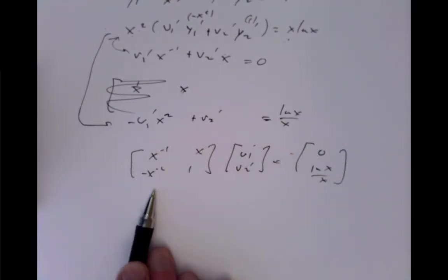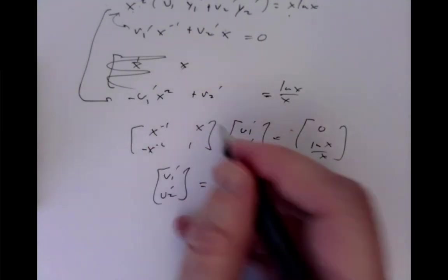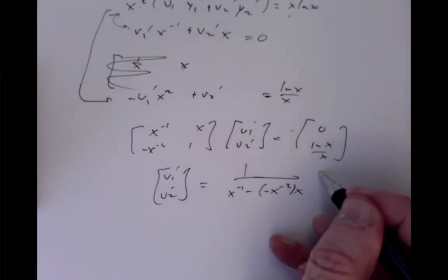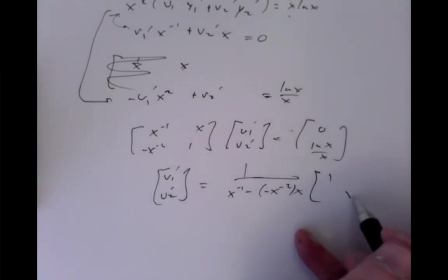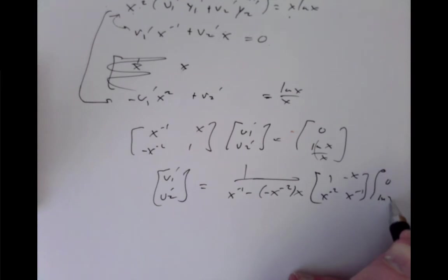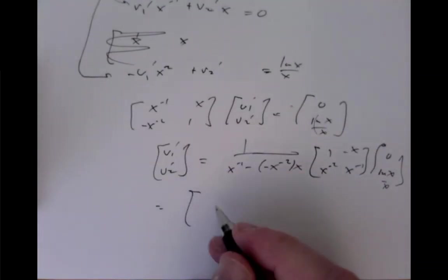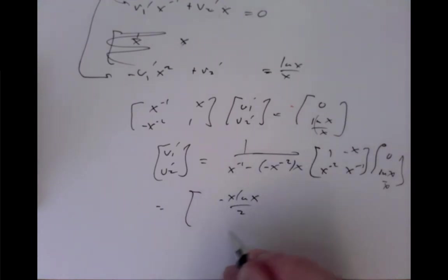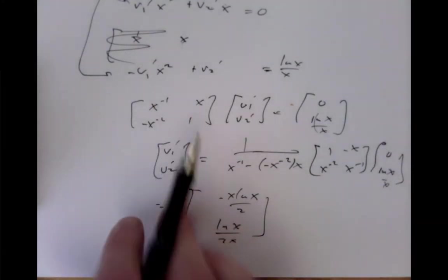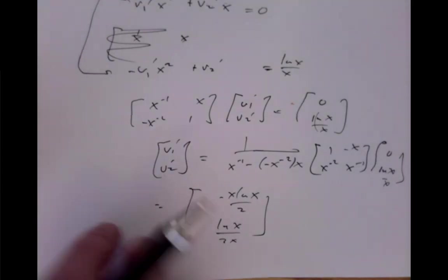Inverting the matrix — the determinant is (1/x)(1) - (x)(-x⁻²) = 1/x + 1/x = 2/x — and multiplying gives v₁' = -x·log(x)/2 and v₂' = log(x)/(2x). These are our expressions for v₁' and v₂', and now we integrate them to get v₁ and v₂.